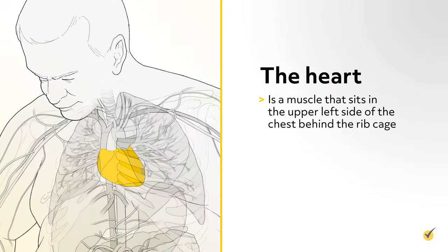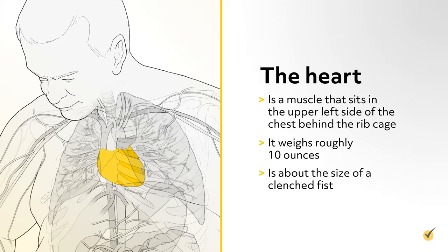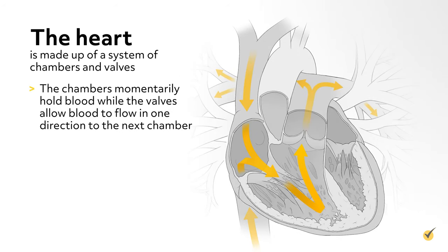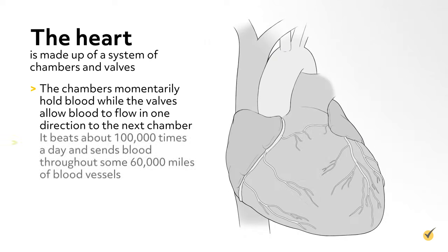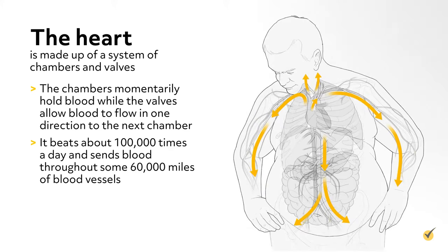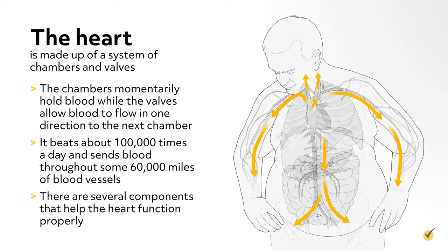The heart is a muscle that sits in the upper left side of the chest behind the rib cage. It weighs roughly 10 ounces and is about the size of a clenched fist. The heart is made up of a system of chambers and valves. The chambers momentarily hold blood, while the valves allow blood to flow in one direction to the next chamber. It beats about 100,000 times a day and sends blood throughout some 60,000 miles of blood vessels.